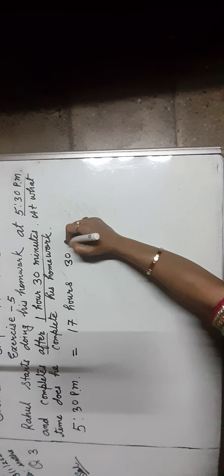Let us do question number 3. Rahul starts doing his homework at 5:30 pm and completes after 1 hour 30 minutes. At what time does he complete his homework? Here, the word 'after' means we have to add 1 hour 30 minutes. Before that, first we convert 5:30 pm into 24-hour clock time. 5:30 pm is equal to 17 hours 30 minutes.